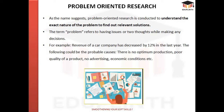Number three: problem-oriented research. As the name suggests, it is conducted to understand the exact nature of a problem and find relevant solutions. Here, the problem refers to issues or thoughts encountered while making decisions. For example, if the revenue of a car company has decreased by 12–15% in the last year, probable causes could be poor production, poor quality of product, no advertising, economic conditions, financial disturbances, or many other reasons. You need to identify the reasons that generated the problem.